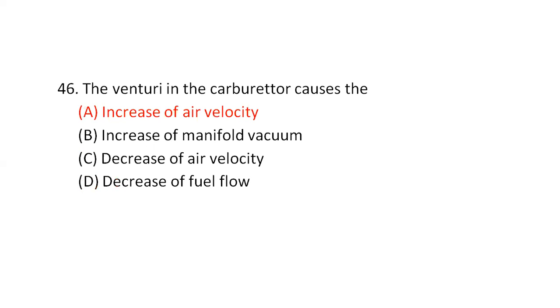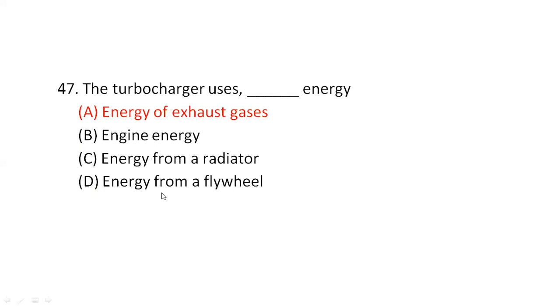The venturi in the carburetor causes — option A — increase of air velocity. Then the turbocharger uses — option A — energy of exhaust gases.